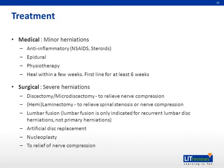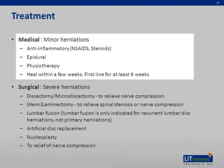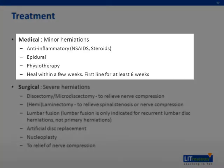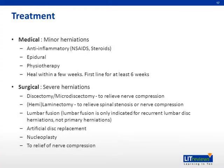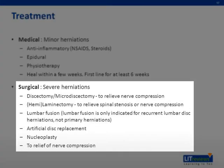Treatment can be medical or surgical. Medical treatment is reserved for minor herniations and includes anti-inflammatory drugs, epidural injections, and physiotherapy. Symptoms would heal within a few weeks, and medical therapy is first-line for at least six weeks. Surgical treatment is reserved for severe herniation or those who have failed medical therapy, and includes discectomy, hemilaminectomy, or lumbar fusion procedures, with the aim of relieving nerve root compression.